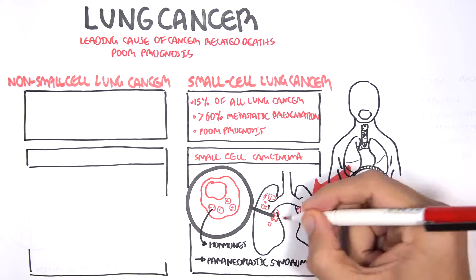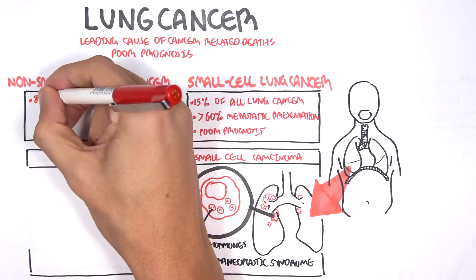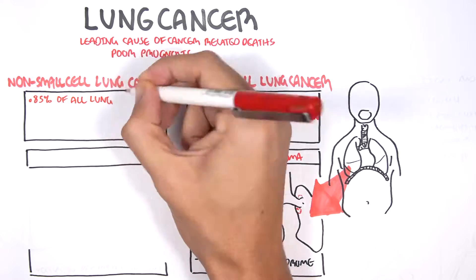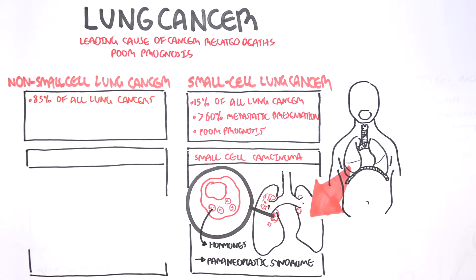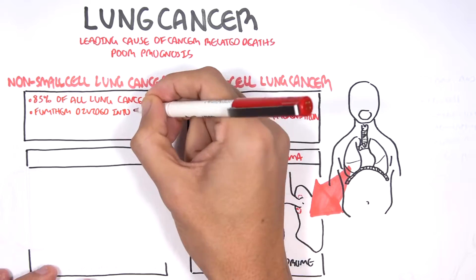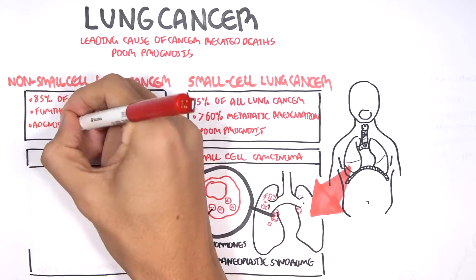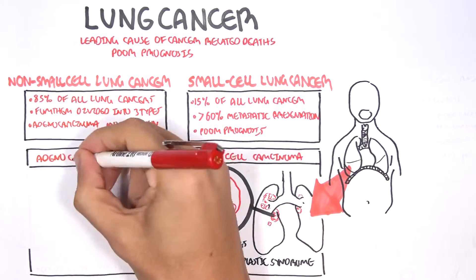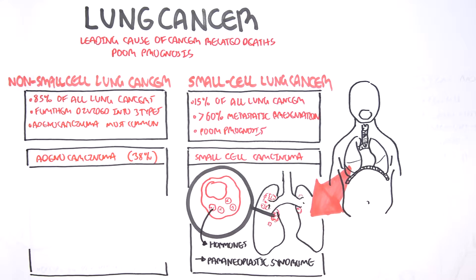Non-small cell carcinomas represent the majority of lung carcinomas, 85%. Non-small cell carcinoma is further divided into three types. Adenocarcinoma is the most common type of non-small cell carcinoma. Adenocarcinomas make up 38% of lung carcinomas.